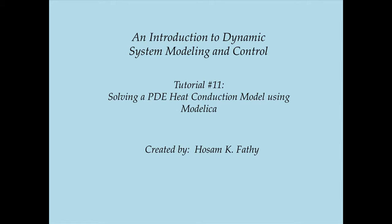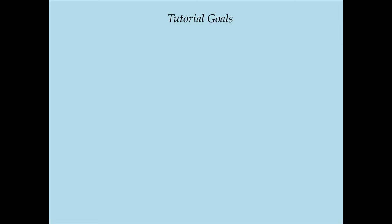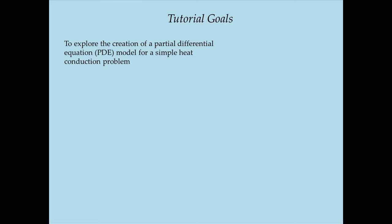We're going to have three goals for this tutorial. So far we've been building lumped parameter models of dynamic systems. The expression 'lumped parameter' refers to the fact that we have a finite number of state variables representing any dynamic system we're trying to model. In this tutorial, I'm going to explore on a very superficial level the modeling of systems with an infinite number of state variables. Those systems are called distributed parameter systems, and very often we model them using partial differential equations instead of ordinary differential equations.